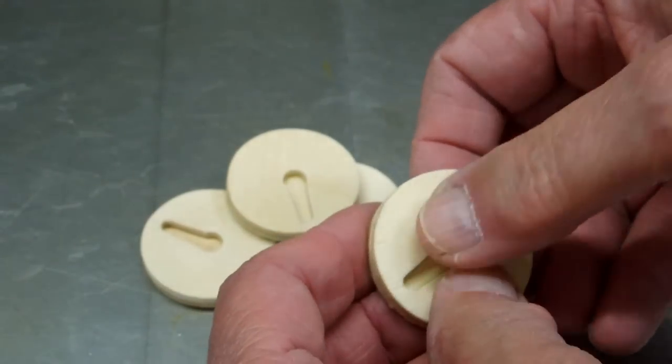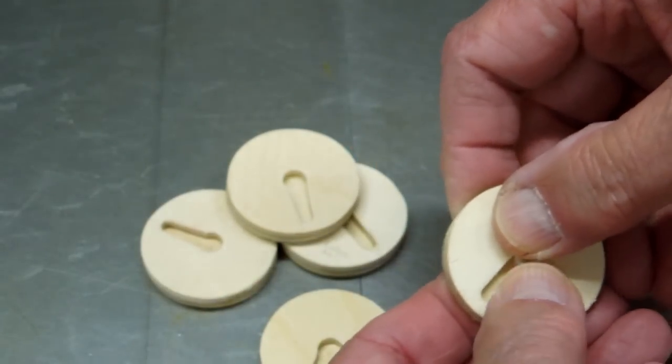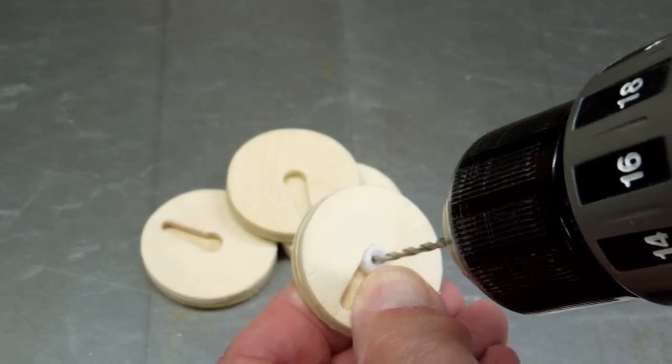I still need to drill the hole for the retaining screw. I'll put that control horn in there and just hold it, spin a brad point bit backwards to mark the center.